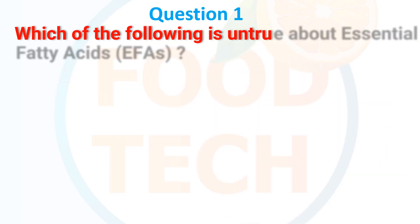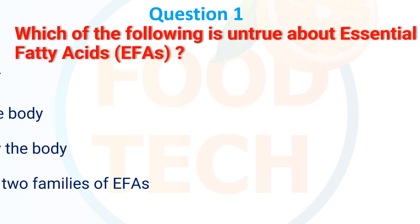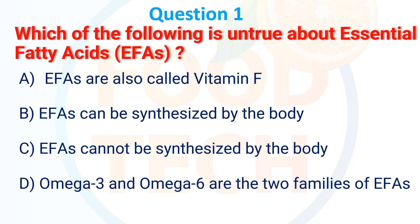Question 1. Which of the following is untrue about essential fatty acids? Options: essential fatty acids are also called vitamin F; essential fatty acids can be synthesized by body; essential fatty acids cannot be synthesized by body; omega-3 and omega-6 are the two families of essential fatty acids. The answer is: essential fatty acids can be synthesized by body.